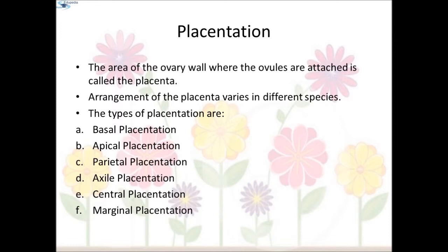Based on placentation, we can also classify the flower. The ovary may consist of one or more chambers or locules, which contain one or more ovules. The area of the ovary wall where the ovules are attached is called the placenta. The arrangement of placenta varies in different species. The types of placentation are: basal, apical, parietal, axial, central, and marginal placentation.